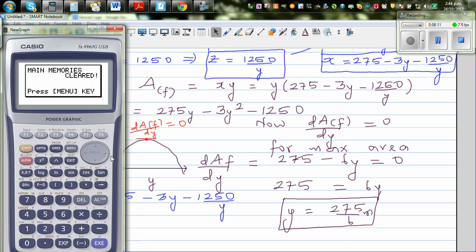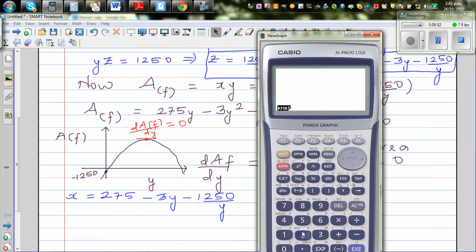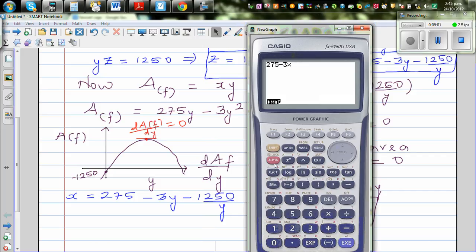Let's differentiate. dA_f by dY would be 275 minus 6Y. Let's set it equal to zero. So 275 equals 6Y, so Y is 275 over 6. Let's use a calculator now. I'll show you a technique to save this as a letter. 275 divided by 6 is 45.83 recurring. Press this arrow key on the calculator and press alpha A. So this is your A.